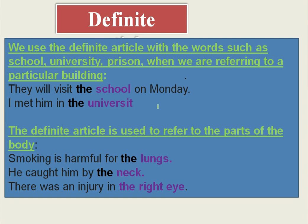But if speaking in the general sense, we can say 'I am a university student.' The definite article is used to refer to parts of the body. 'Smoking is harmful for the lungs' — lungs are part of the body. 'He caught him by the neck' — neck is also part of the body. 'There was an injury in the right eye' — the right eye is also part of the body. We use 'THE' when speaking about parts of the body.